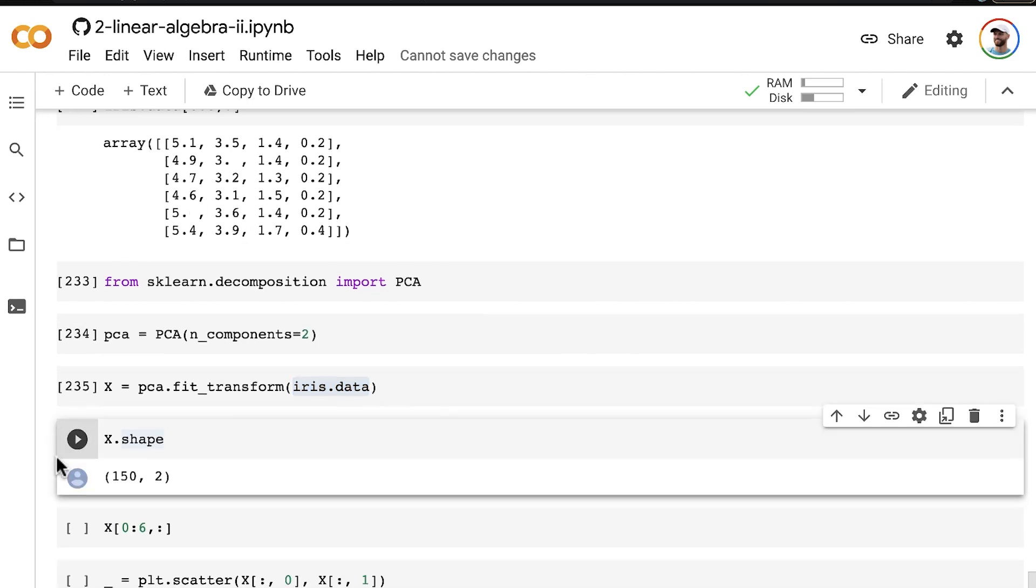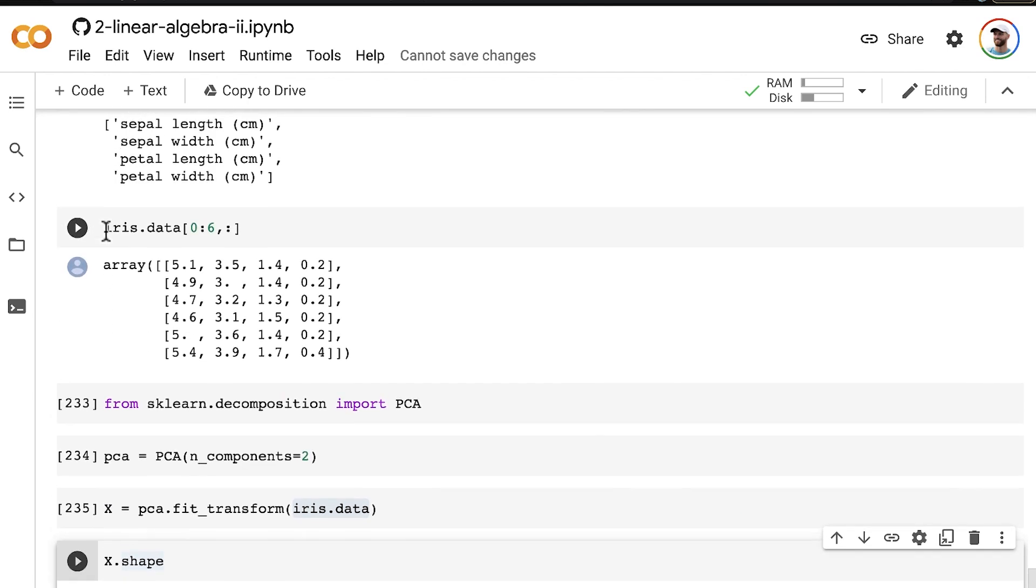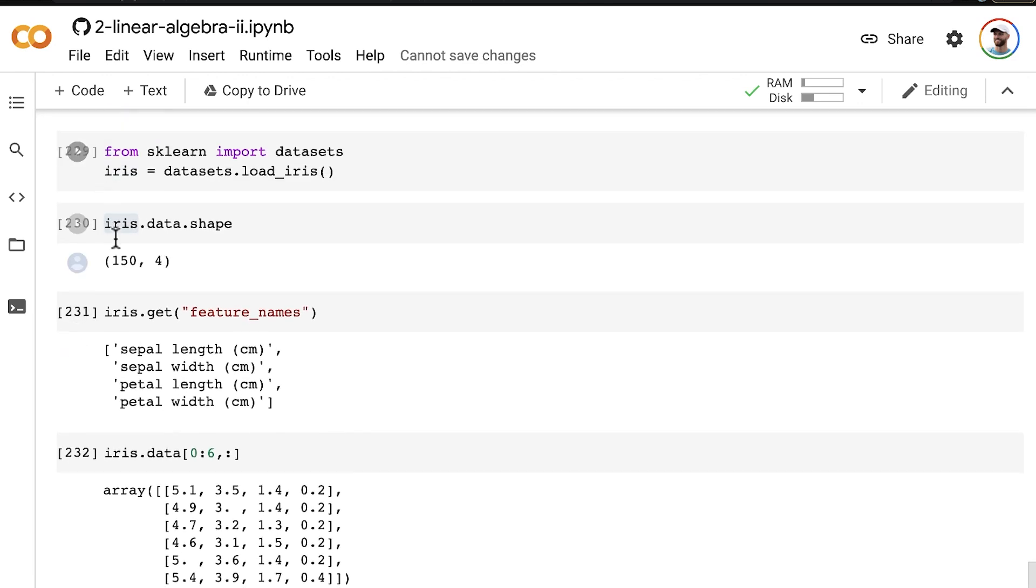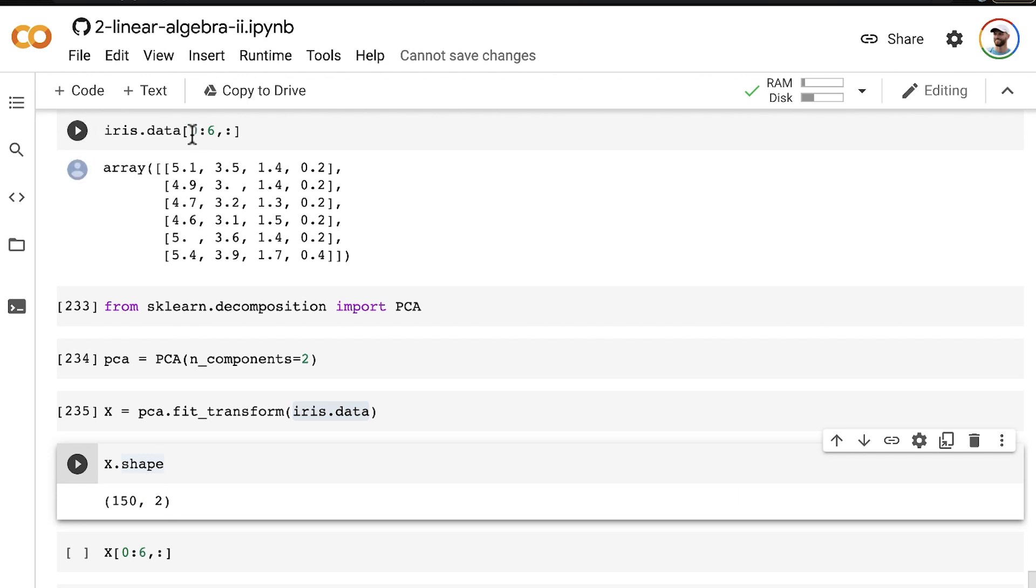Now, the shape of our output here has 150 rows. So we still have 150 rows, one for each one of our flowers in the data set, each one of our irises. But now we have our two principal components instead of four separate features for each flower.